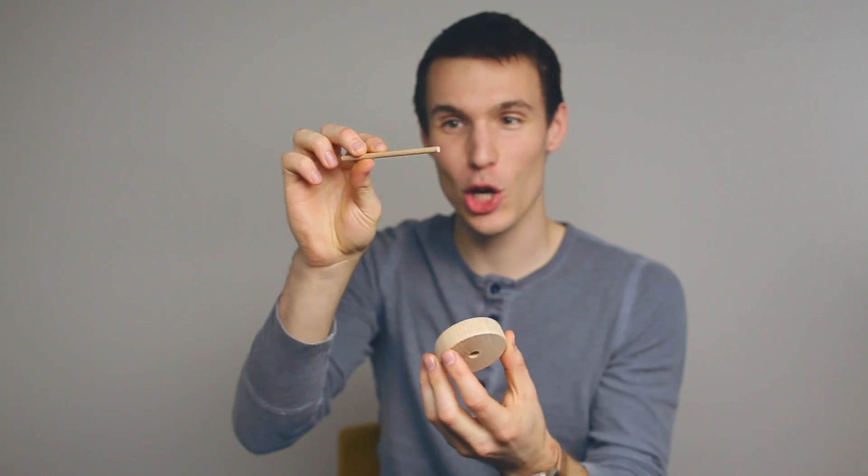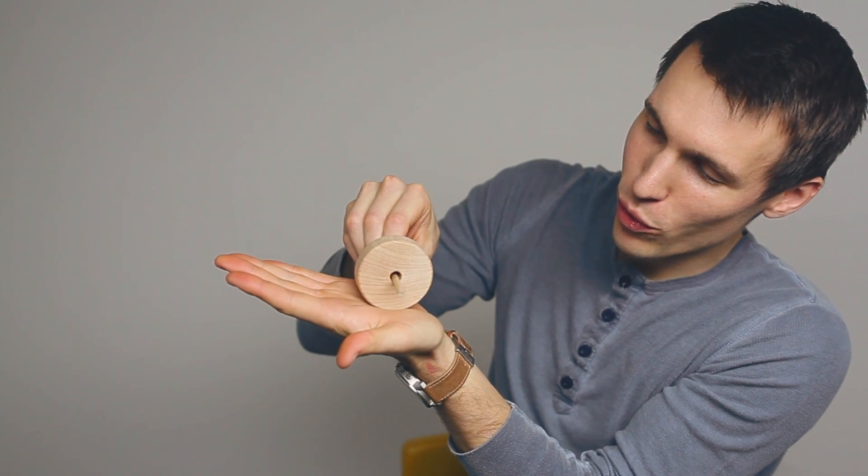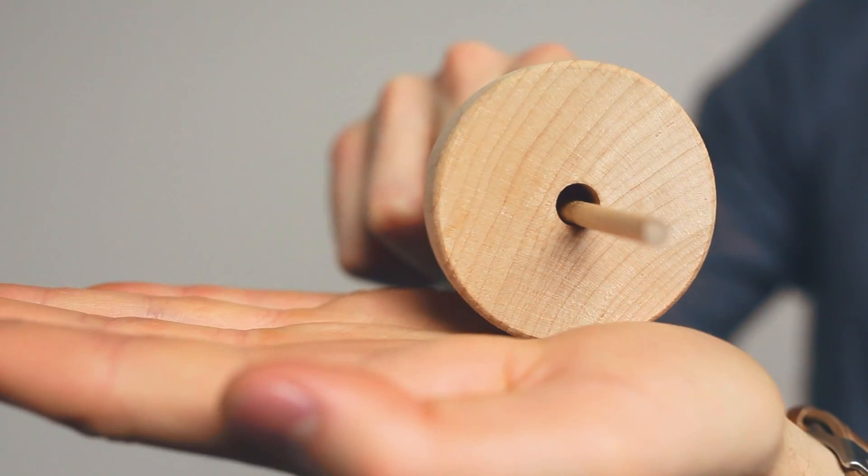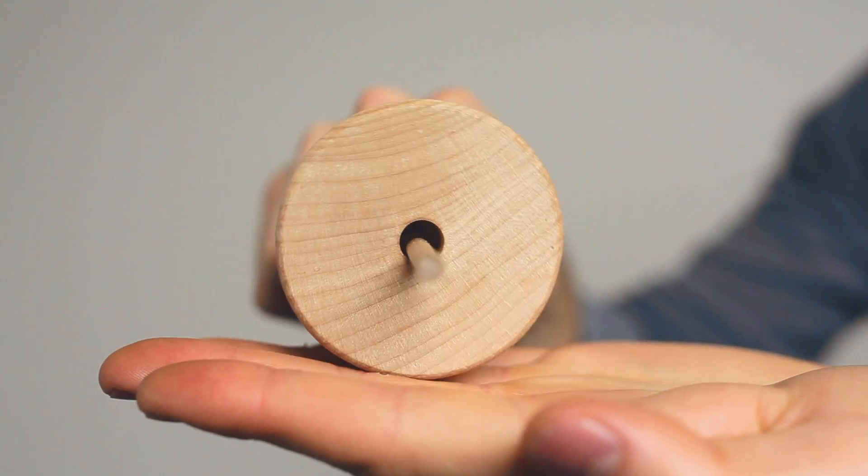So here we have a wheel and an axle. Now, imagine that a car is sitting on this axle. As the car rolls, we see that the axle actually stays parallel to my hand or the ground.